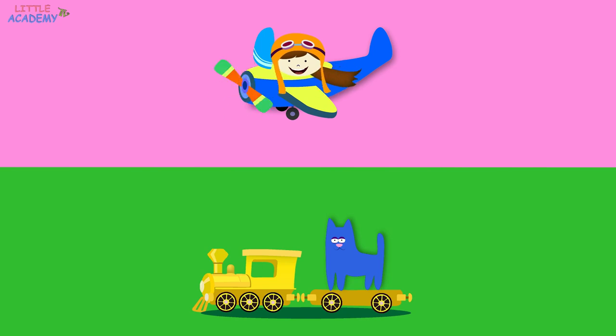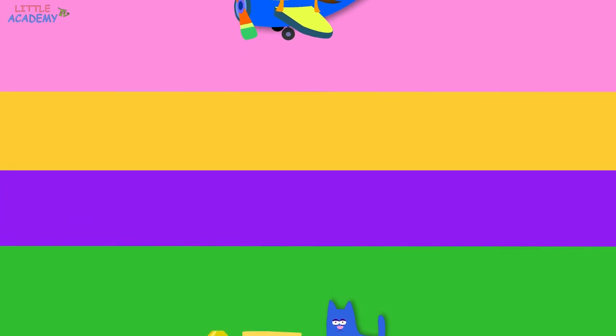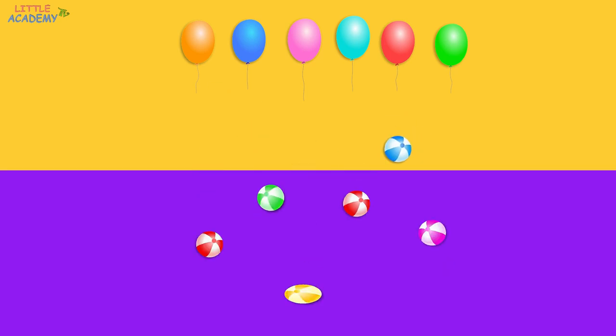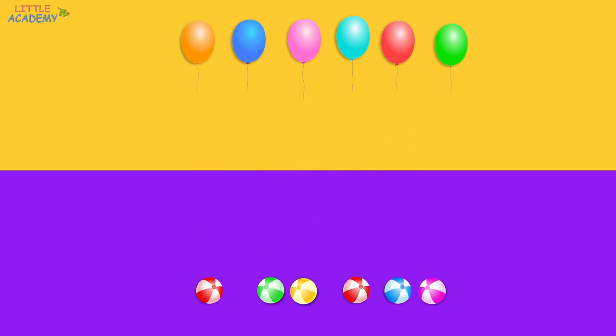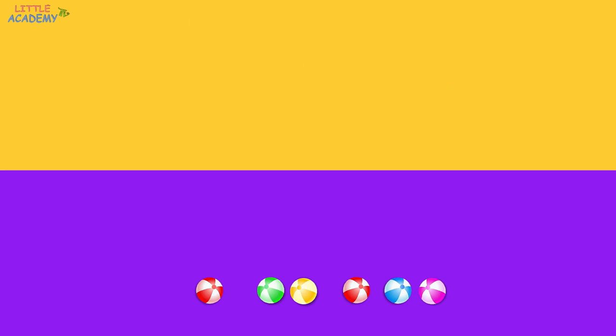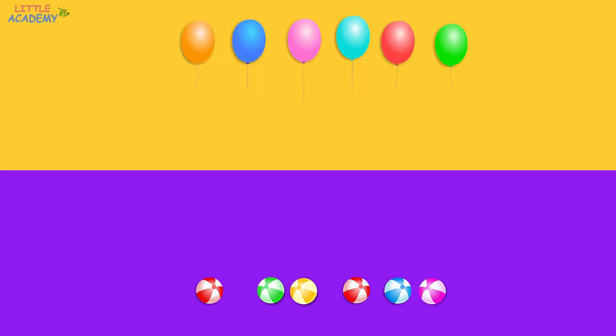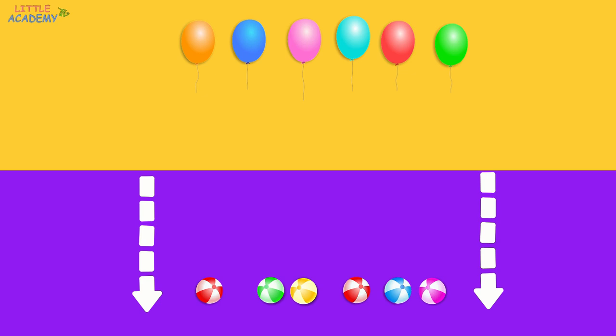Excellent. And one more time. The color yellow is above. The color purple is below. Look! The balloons flew up. And the balls fell down. This is up — the balloons are above. The balls are below. This is up. And this is down.